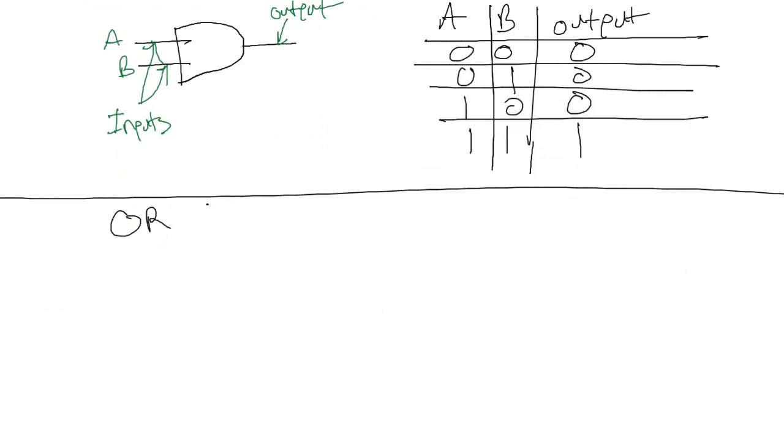This one's called the OR gate. And it looks similar to the AND gate except it has this pointy top. It has inputs A and B. And it has an output. Let's write AND up here.